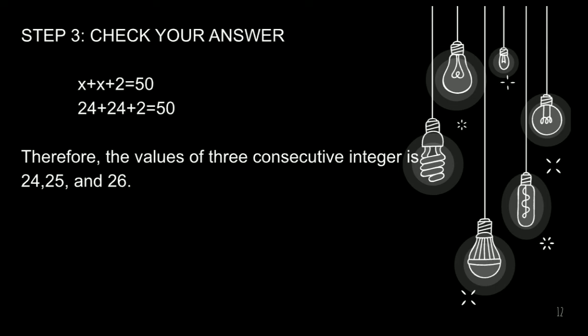At kung nagtataka ka kung bakit 25 and 26 ang kasunod nito, babalikan natin ang ating definition kanina sa consecutive integer. Sa consecutive integer ay nag-a-add lang tayo ng 1. Kaya, kapag ang naunang number ay 24, mag-a-add lang tayo ng 1, which is magiging 25, and 25 plus 1 ay 26. Kaya, ang 3 consecutive integer natin ay 24, 25, and 26.